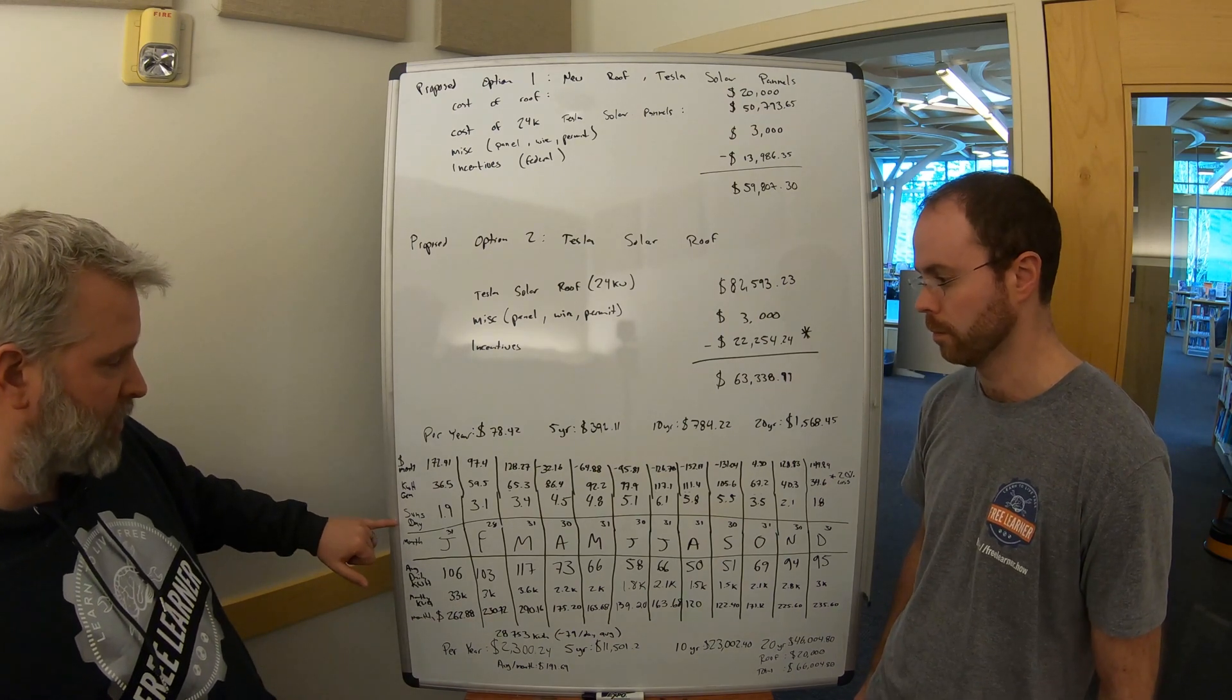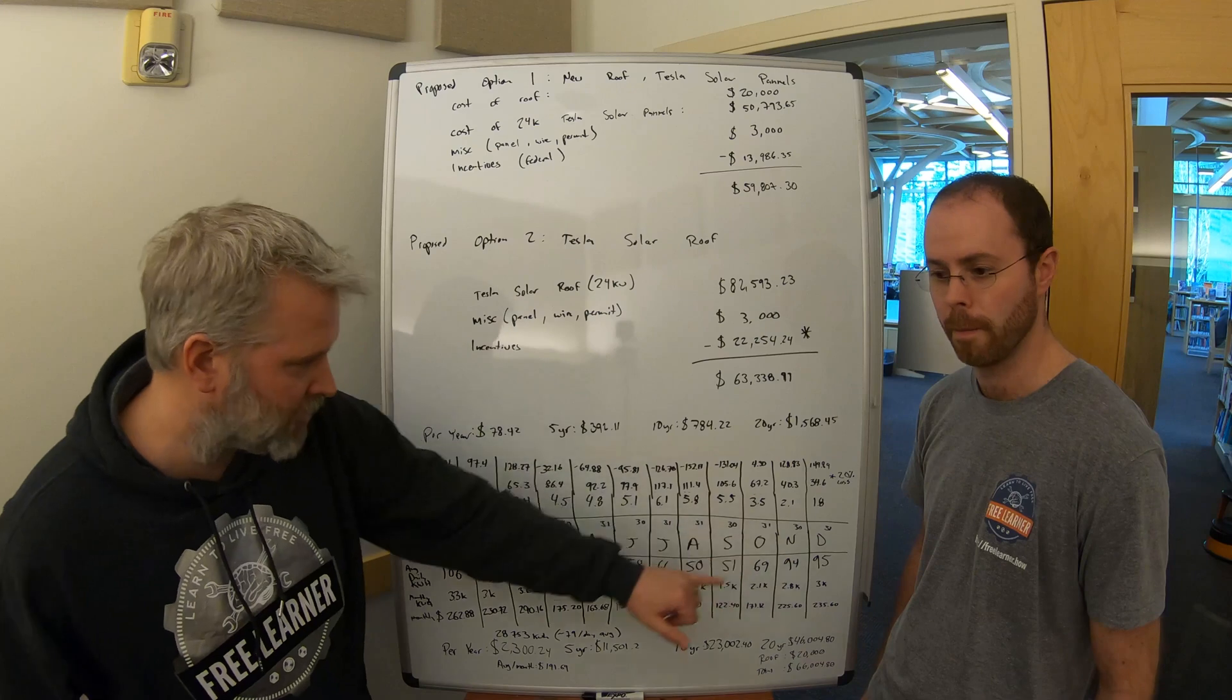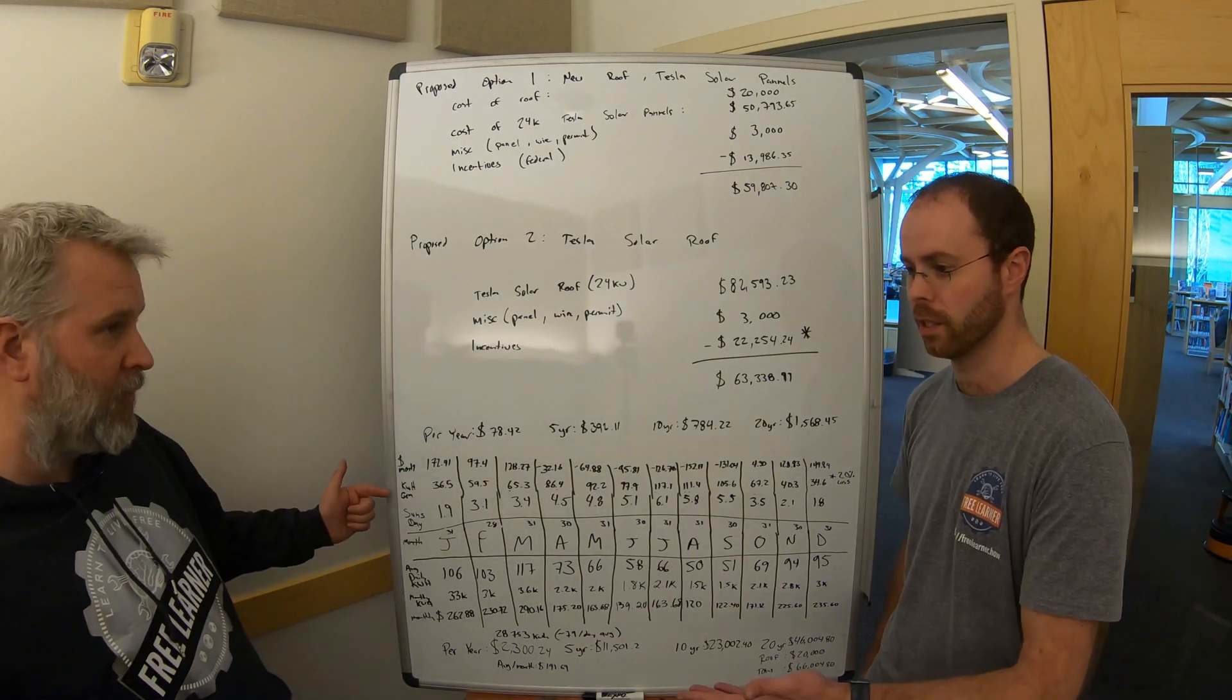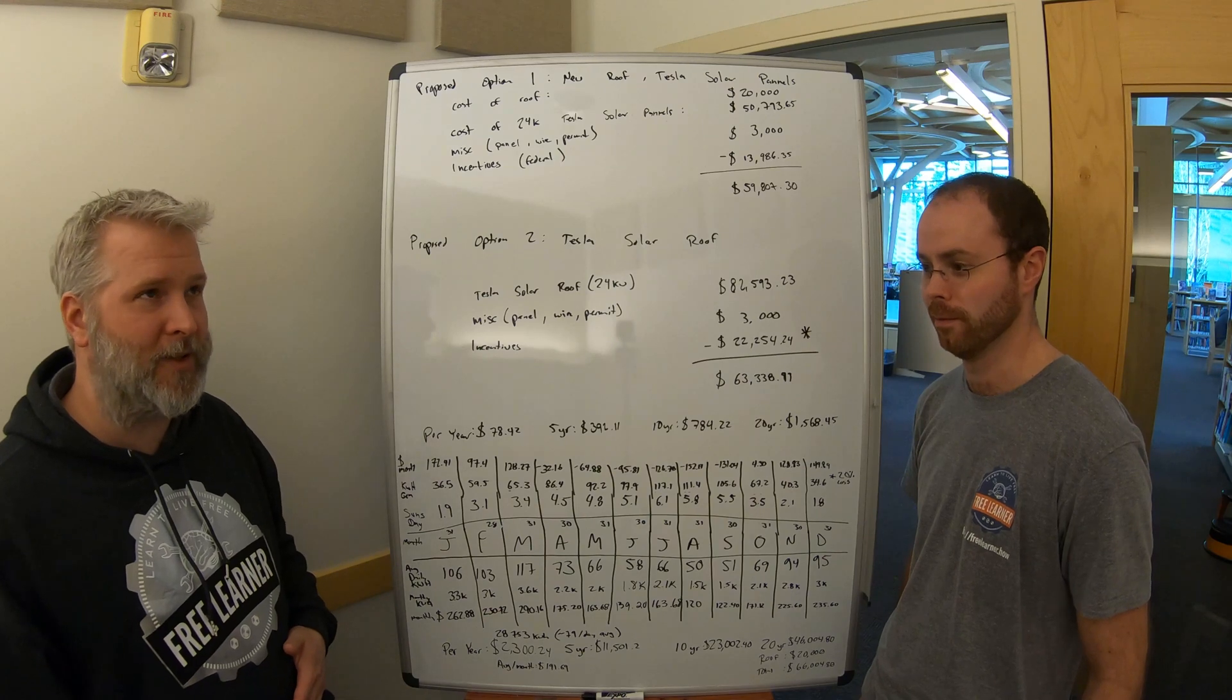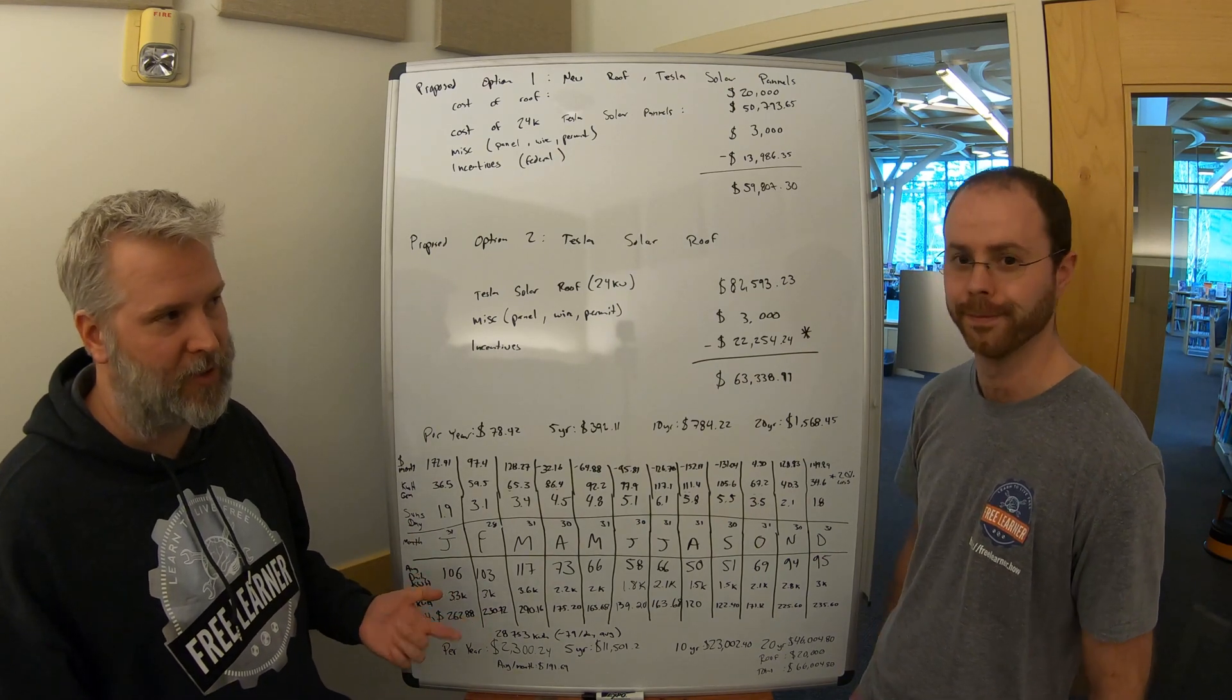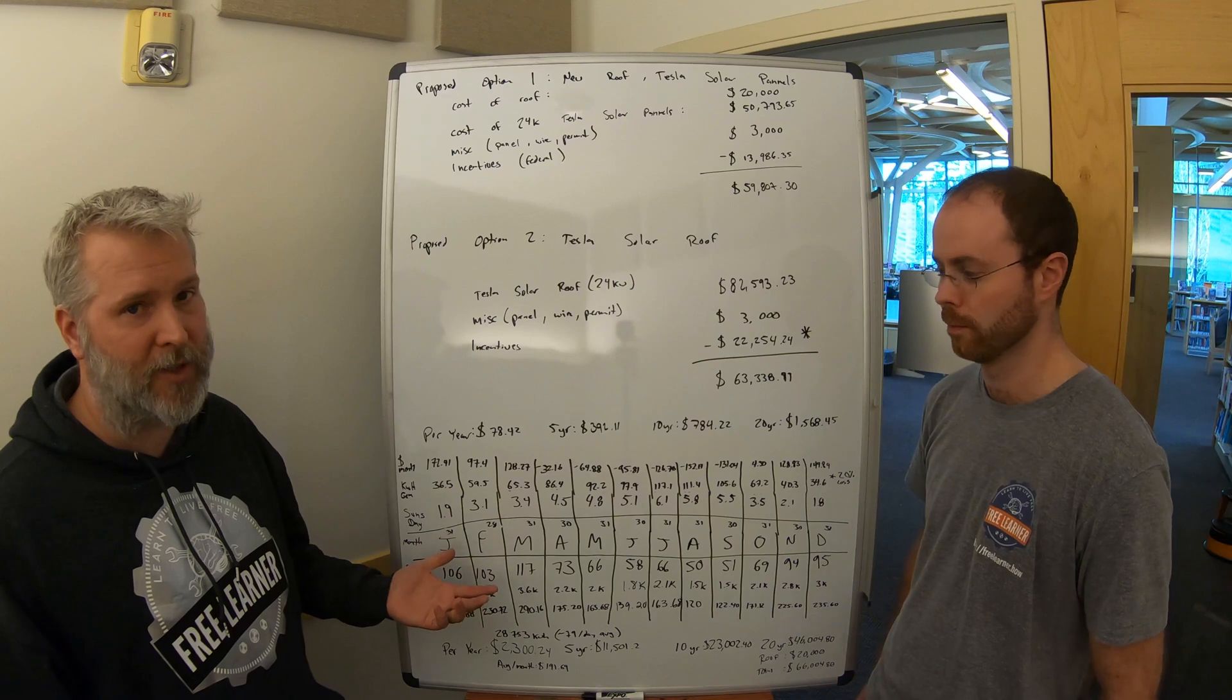And so what we did is we found out how many suns there were for each one of the months of the year, on average, for the day. What's a sun? Oh, it's 1,000 watts per meter squared per day, so it's essentially one peak hour of your solar system.